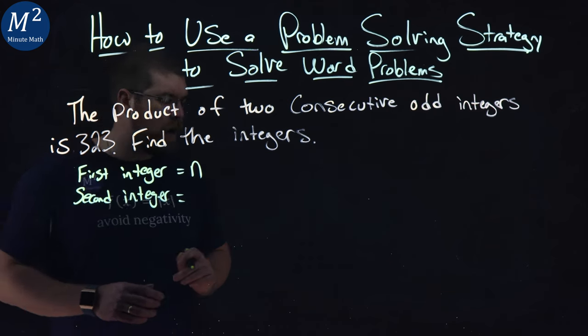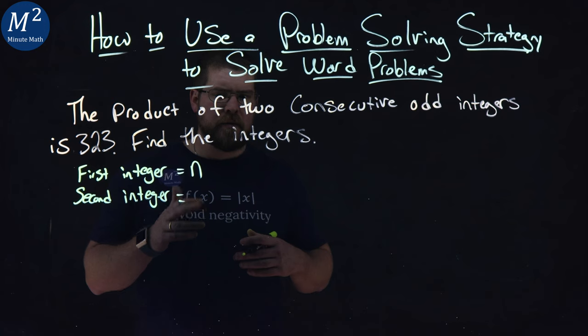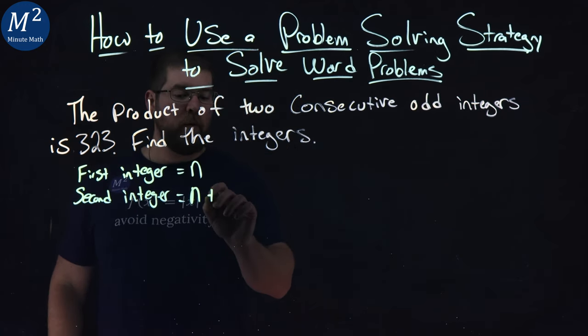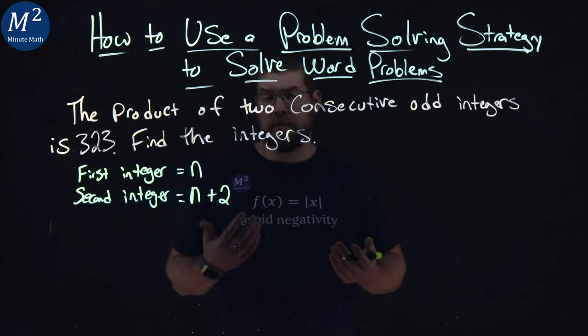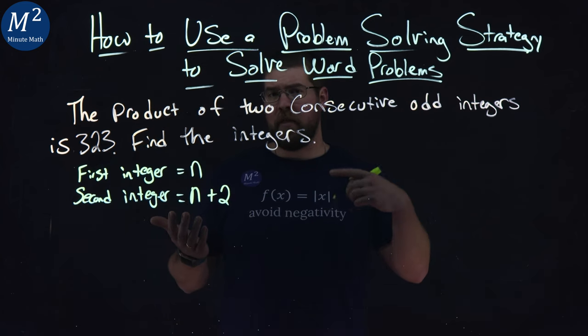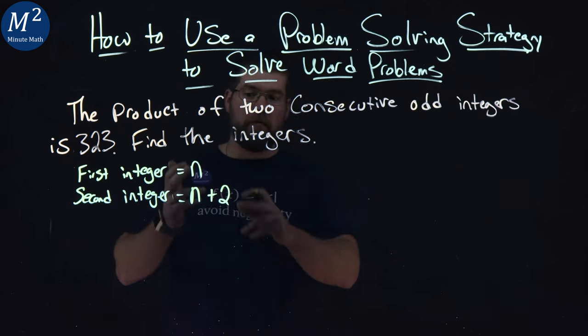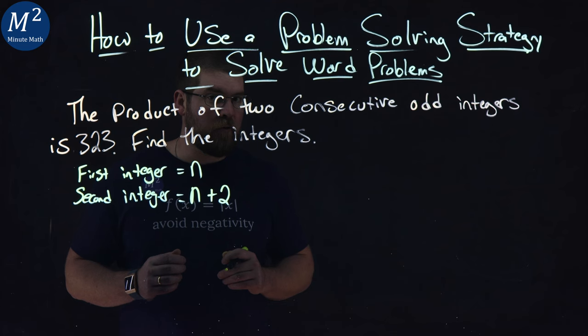If it's also odd, it can't be n plus 1, it has to be n plus 2. Whatever the previous number was, we add 2 to it. So if the first number is 1, we add 2 to that, 3 is the next odd integer. But we don't know what the first one is. So really, we want to find what that first one is and go from there.